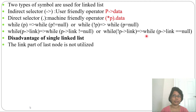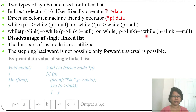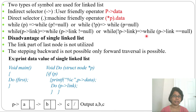Disadvantages of singly linked list: first, the link part of the last node is not utilized because it is null, yet it still reserves memory. Second, stepping backward is not possible since it only traverses forward.